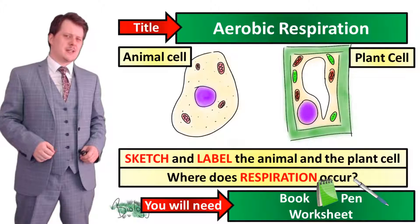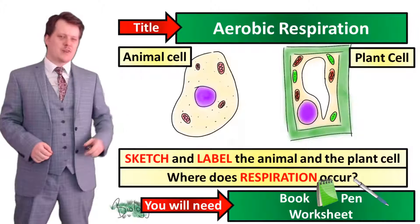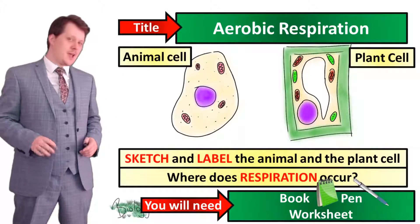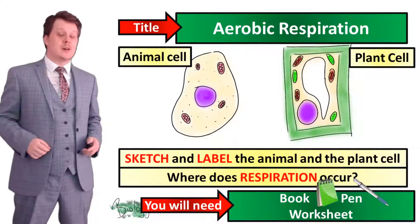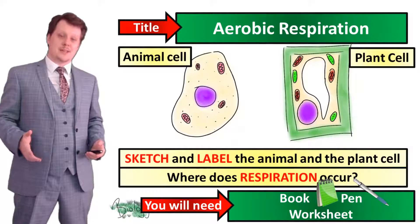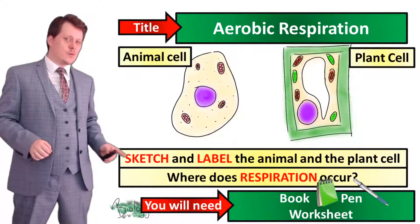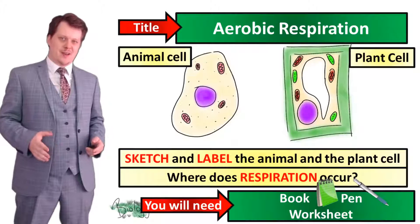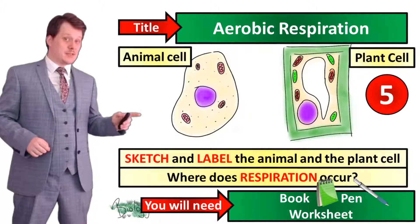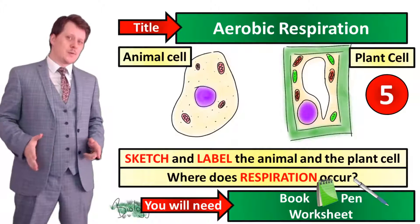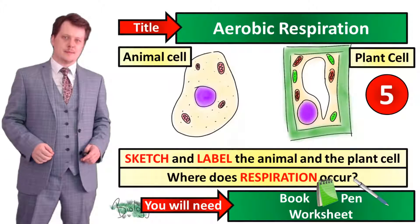In your books, get down today's title which is aerobic respiration. For your starter activity, sketch and label the animal and plant cells shown and identify where respiration occurs. I'll put five seconds on the clock; pause the video if you need more time, and when you're finished we'll go through the answers together.